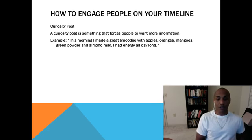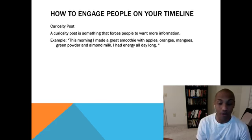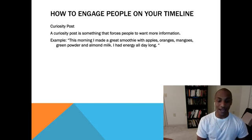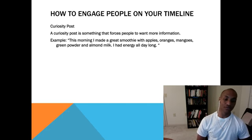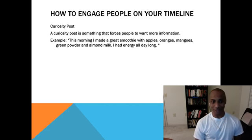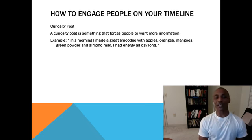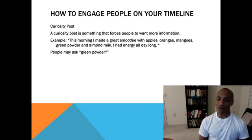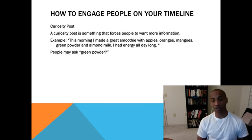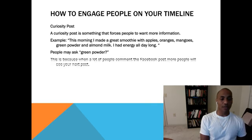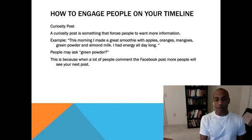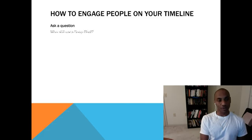Here's a good example of a curiosity post — it's going to intrigue somebody to want more information. You might say: 'This morning I had a great smoothie with apples, oranges, mangoes, a green powder, almond milk, and had a lot of energy all day.' People are going to ask, 'What's that green powder?' — and that gives you an opportunity to talk about something you can offer, like if you're in health and wellness.